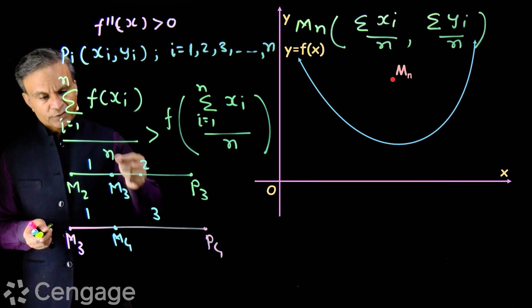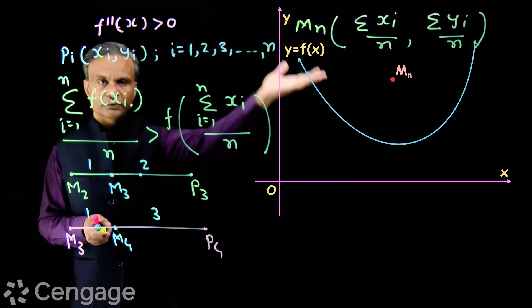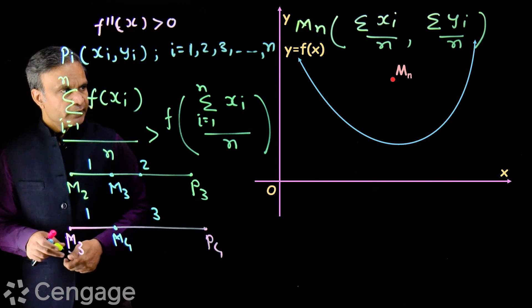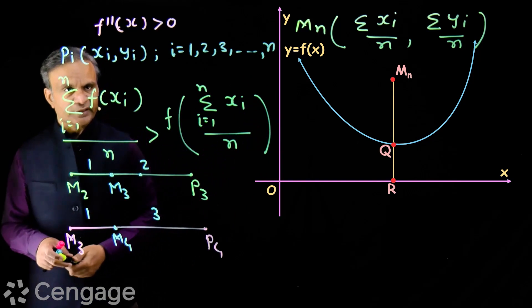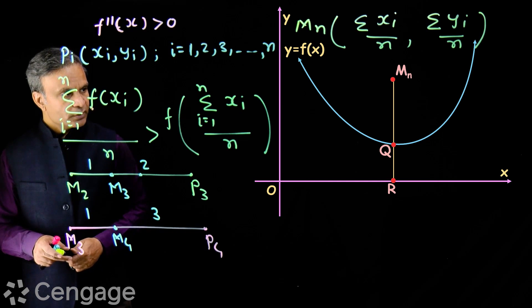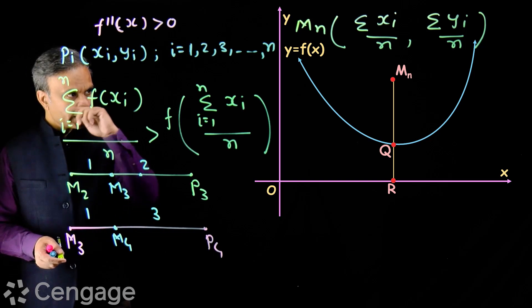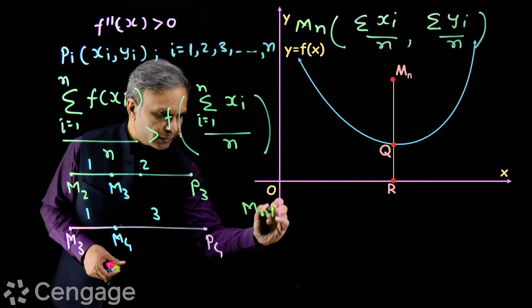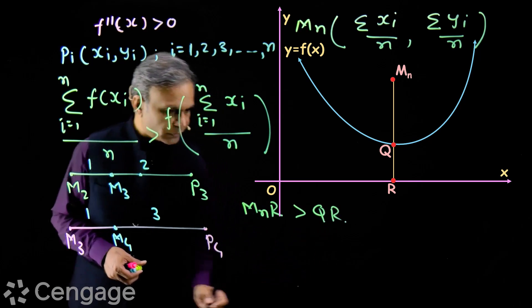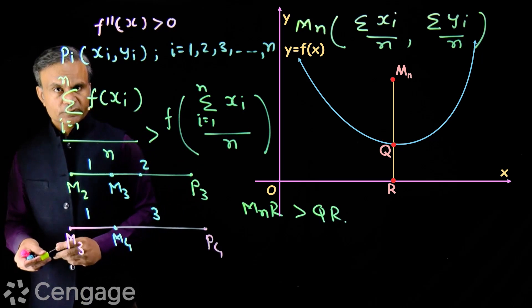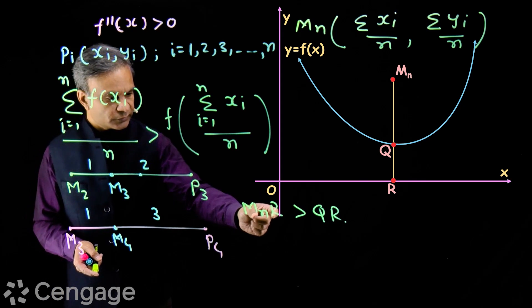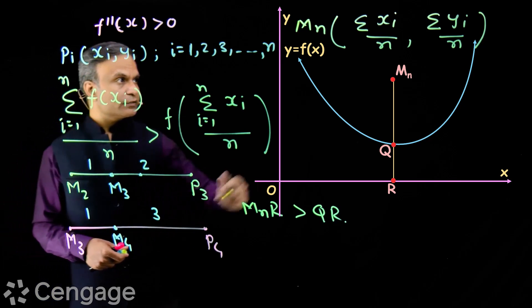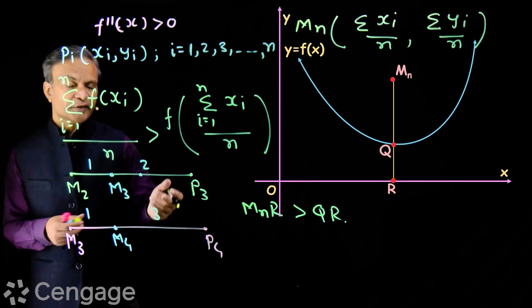Definitely all these points — M2, M3, M4, and Mn — will lie in this region above the curve. Now we consider point Mn and through this point we draw a vertical line perpendicular to the x-axis, which intersects the curve at point Q and the x-axis at point R. Then clearly from the figure, MnR is greater than QR. The length MnR is the ordinate of point Mn.